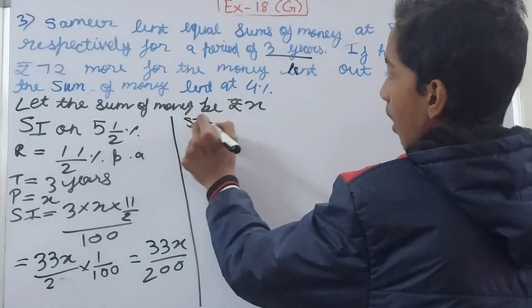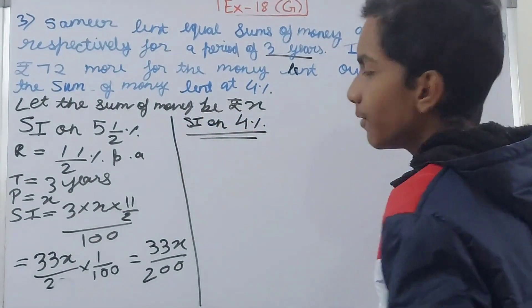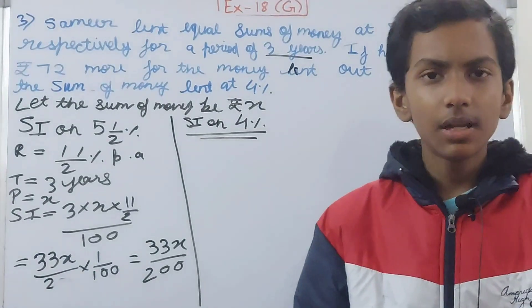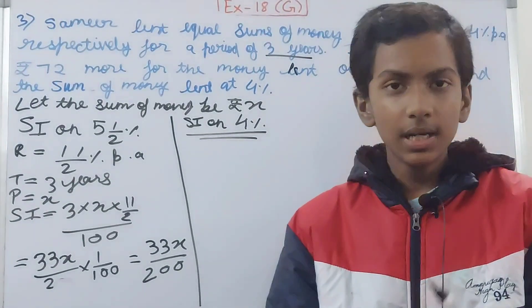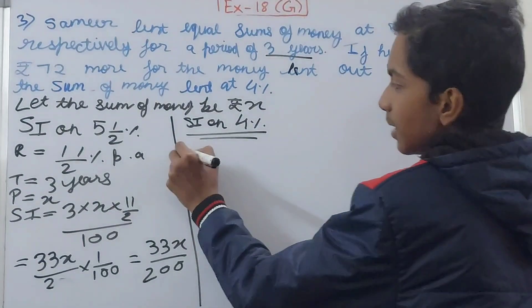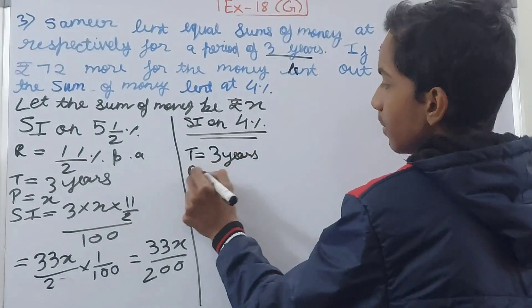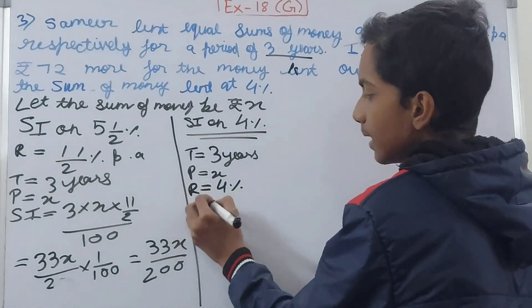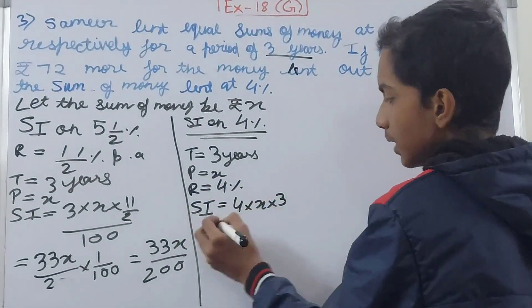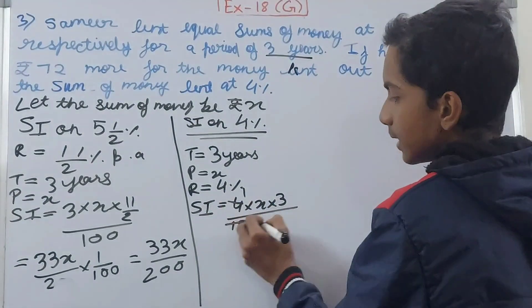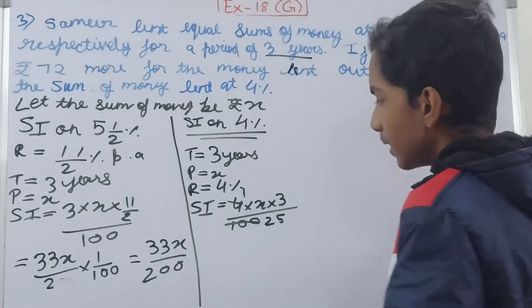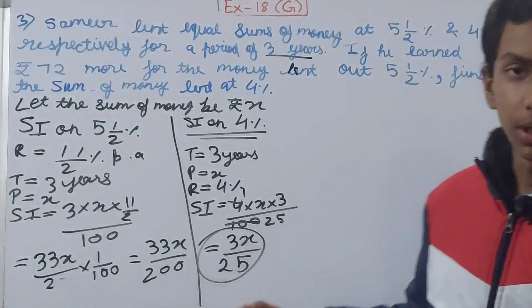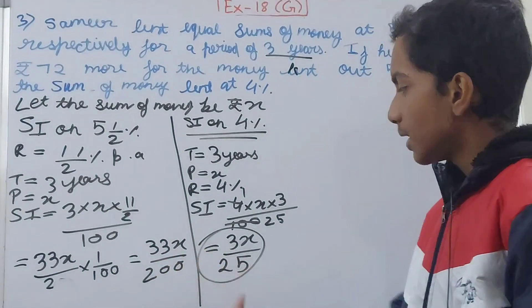Now find the simple interest on the sum lent at 4%. The principal is x, time is 3 years, and rate is 4%. SI = (4 × x × 3) / 100. Cancelling 4 and 100 gives 25, so SI = 3x/25. This is the interest on the second sum at 4%.